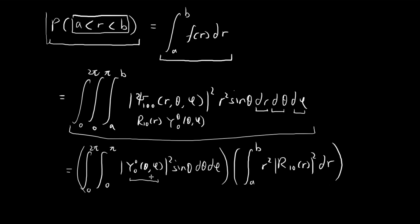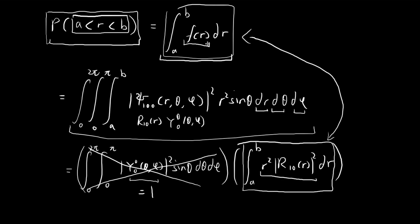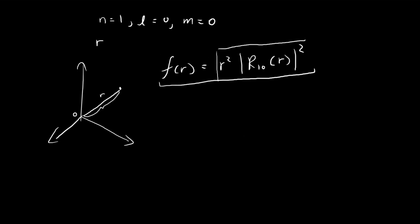We know that the angular function itself is going to be normalized, so that whole term is just going to be equal to 1, and we can just ignore it. So you can see that if we want to find the probability of finding the particle at a distance between a and b from the origin, all we have to do is consider the radial integral. Comparing the form of this integral with our earlier expression, you can see that r² |R₁₀|² is actually the probability density function. So using the probability density function, it tells us how probable it is to find the particle for any given value of r. Given this function, we can now try to maximize it to find the most probable value of r.